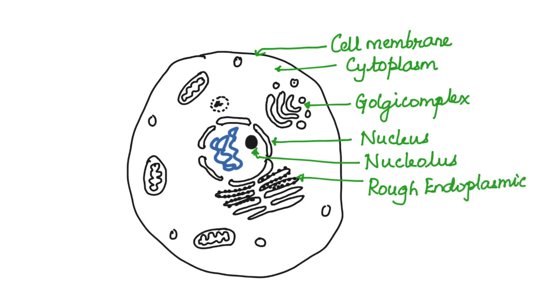The endoplasmic reticulum which has ribosomes attached to it is called the rough endoplasmic reticulum, and the ones without ribosomes are called the smooth endoplasmic reticulum. The endoplasmic reticulum deals with production of proteins and lipids, which are then sent to the Golgi complex for modification and packaging.